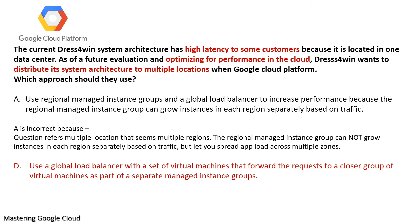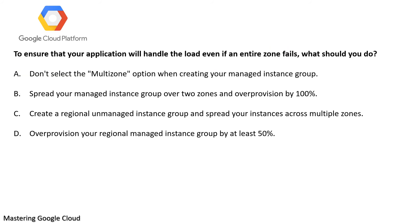If you have a different view, please post in the comments and we'll discuss it. Third question: It's a conceptual question. To ensure that the application will handle the load even if the entire zone fails, what should you do? You should know that over-provisioning your regional managed instance group by at least 50% is the right answer.